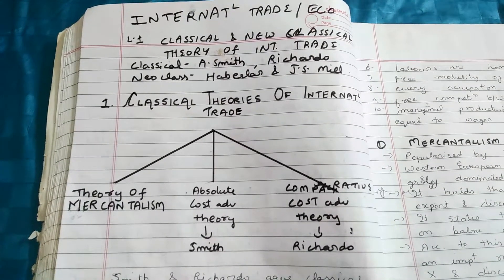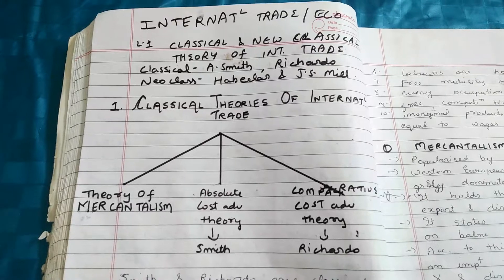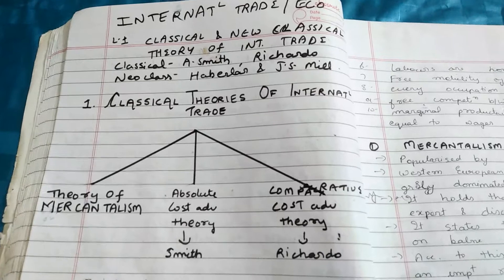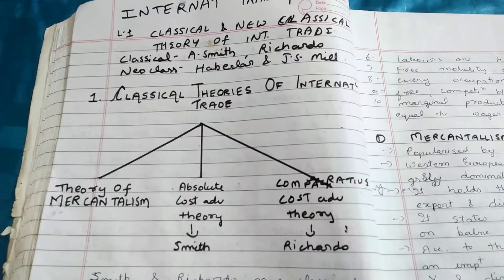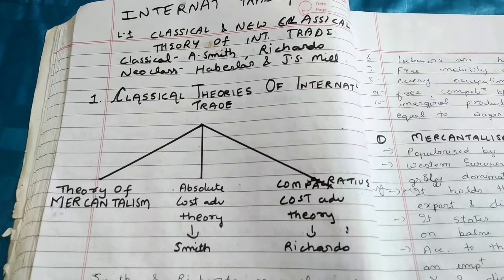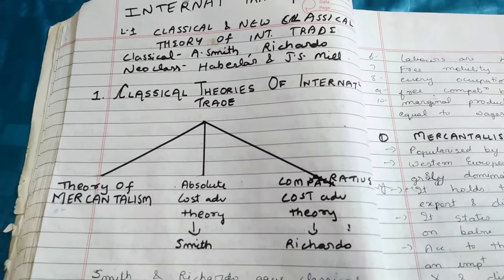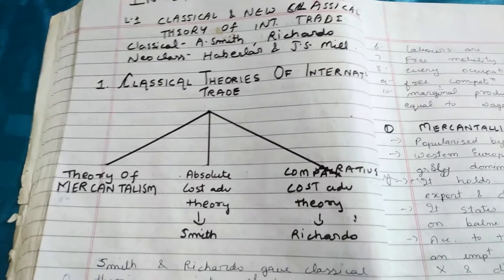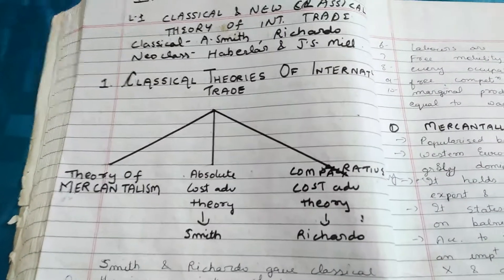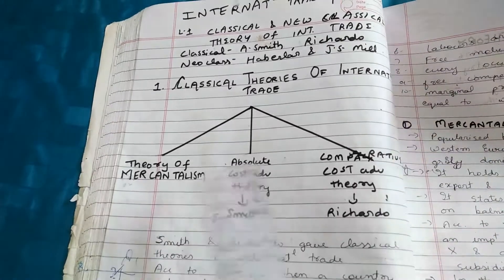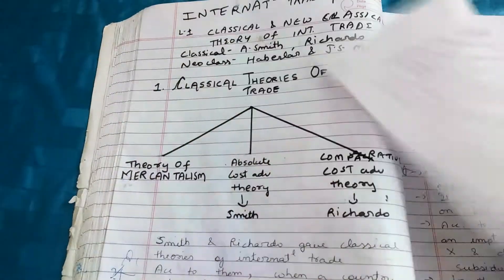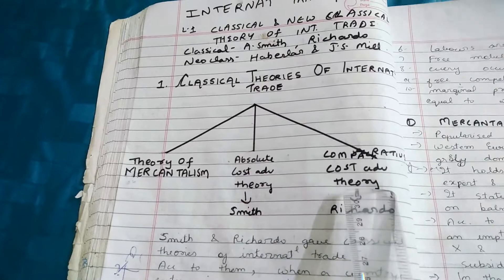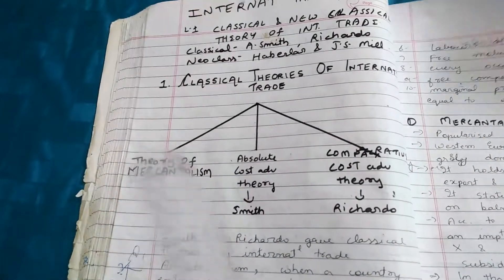Hello everyone, welcome back to my channel. In this video we are going to discuss some theories of international trade. We will start with classical theories, then new classical, then modern theories of international trade. In classical theory, there are three theories: the theory of mercantilism, absolute cost advantage theory, and comparative cost advantage theory.